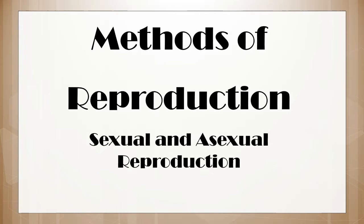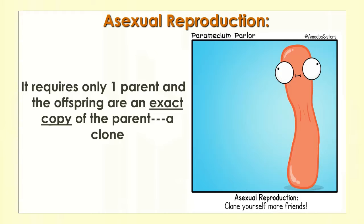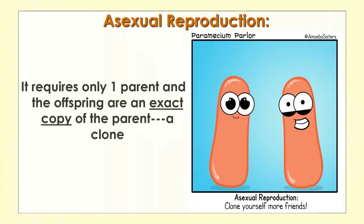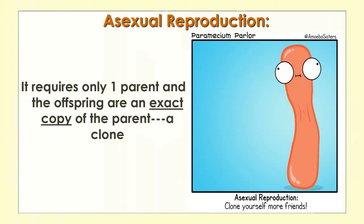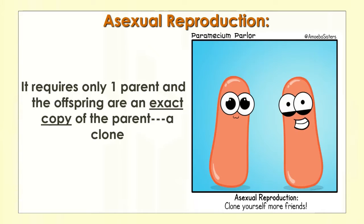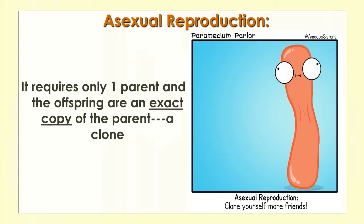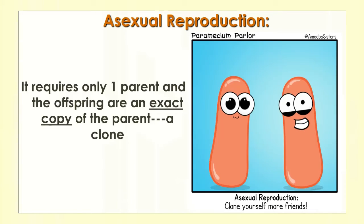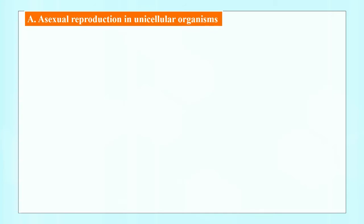The methods of reproduction we will be discussing are sexual and asexual reproduction. First, we will be talking about asexual reproduction. In asexual reproduction, it requires only one parent and the offspring are an exact copy of the parent — that is, a clone. There is only one parent cell required, whereas in sexual reproduction we need two parents to produce an offspring. Remember, asexual reproductions are divided into two parts: for unicellular organisms and for multicellular organisms.